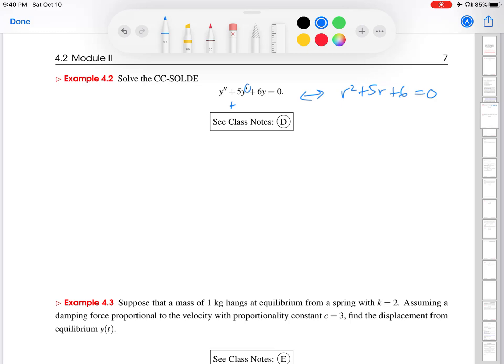To get the characteristic equation, you replace the order of the derivative by a power of r: r to the first, r squared. And here, there is no derivative—that's r to the 0, so that's 1. That gives us the same characteristic equation.